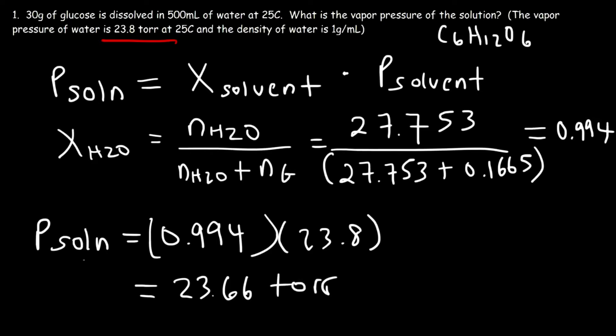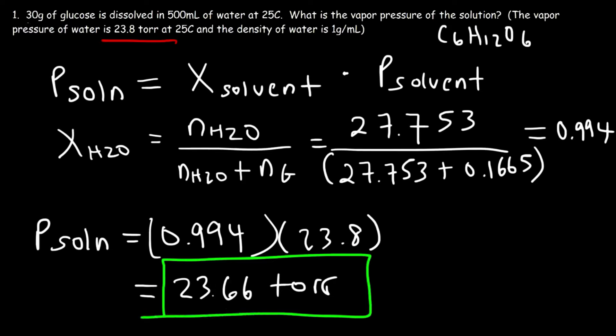So now you know how to calculate the vapor pressure of a solution when you have a non-volatile solute dissolved in water. Now let's work on number two: 40 grams of calcium chloride is dissolved in 600 milliliters of water at 25 degrees Celsius. What is the vapor pressure of the solution? This time we have an ionic solute dissolved in water, so how is this problem different from the last one? Let's calculate the moles of water and the moles of calcium chloride first.